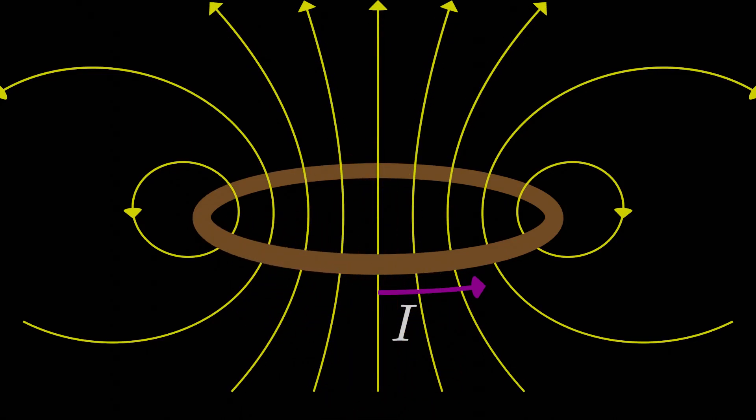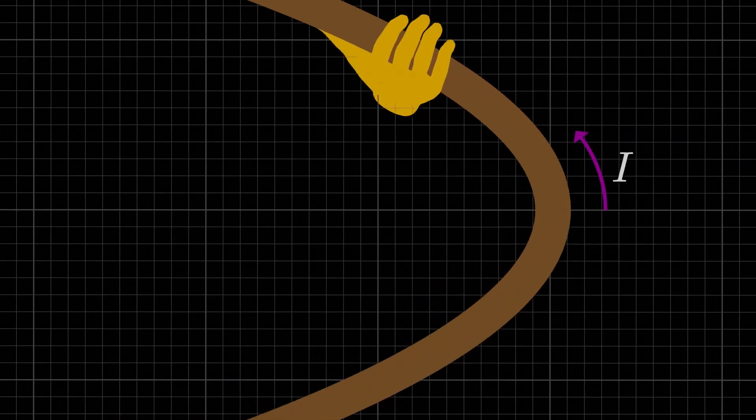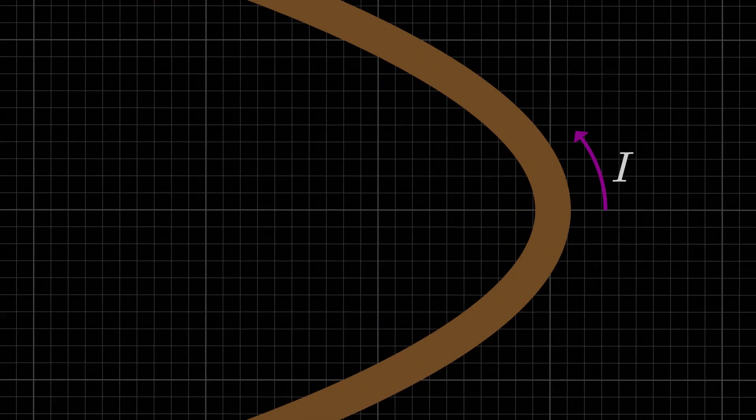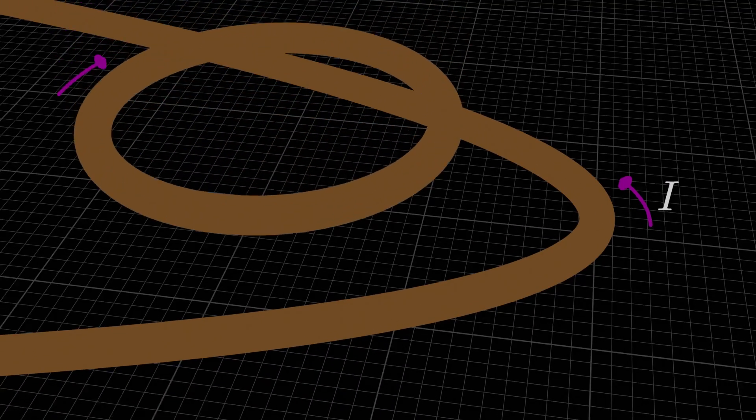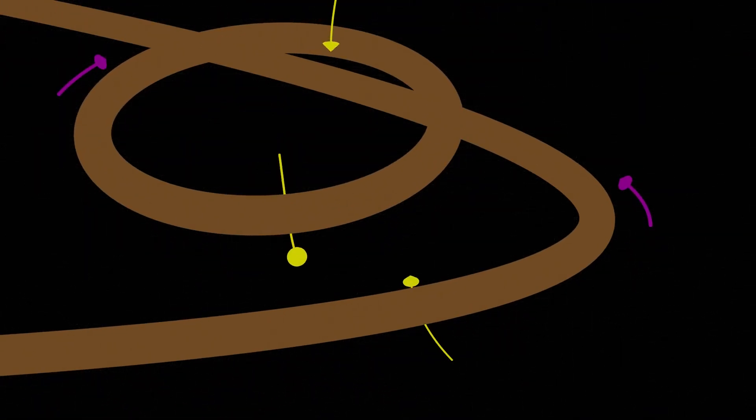This actually allows us to introduce a rule that we're going to make use of a lot in the next two modules. The rule is, close to a current carrying wire, the magnetic field direction is given by the modified right hand rule. If we have some set of current carrying wires all making crazy shapes and going in all sorts of directions, it can be hard to intuitively understand the direction of the magnetic field at any point in space.